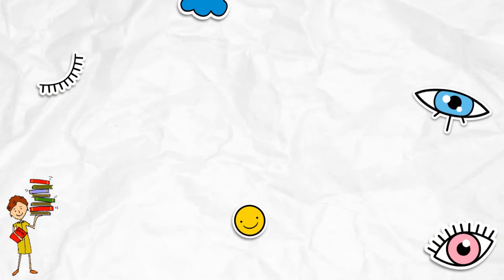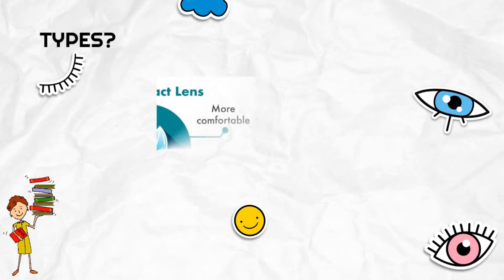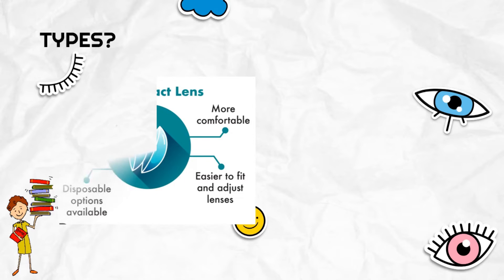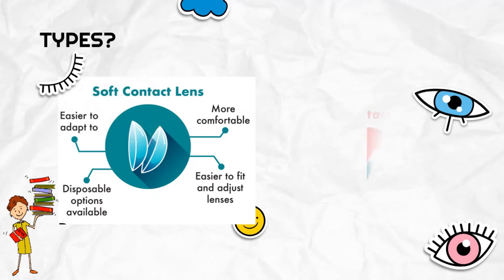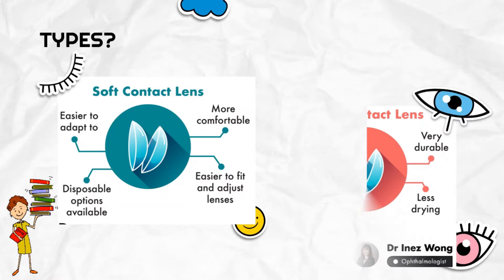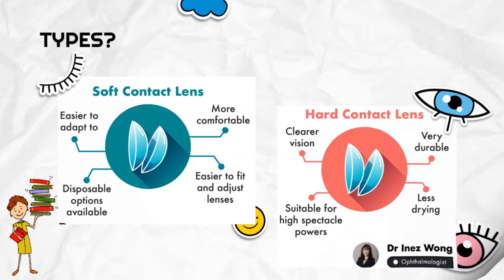There are two types of contact lenses: soft contact lens and hard contact lens. Soft contact lenses are easier to adapt, more comfortable, have disposable options available, and are easier to fit and adjust. Hard contact lenses provide clearer vision, are very durable, suitable for high spectacle power, and less drying.